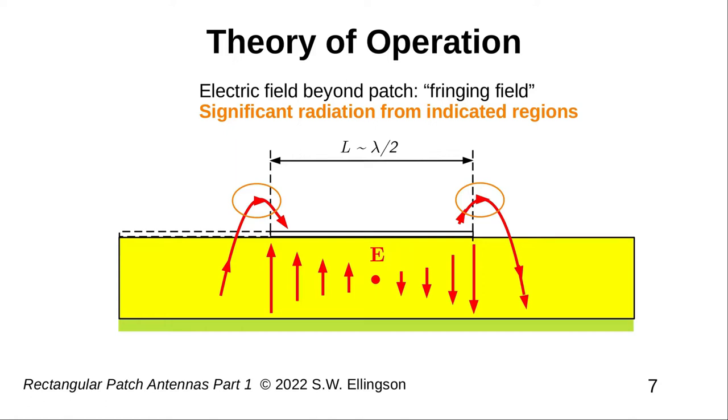Radiation associated with those particular components of the fringing field, that is, the components I've circled here in orange, are what account for the radiation. And this radiation propagates towards the top of the screen because it's in phase when it travels in that direction.